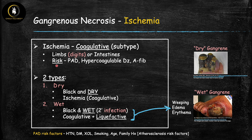The main risk factors for ischemic gangrenous necrosis are risk factors for peripheral arterial disease: high blood pressure, diabetes, high cholesterol, smoking, older age, and family history — all of which increase risk of thrombosis and ischemia. Another important risk factor is hypercoagulable disease. Finally, atrial fibrillation is a very important risk factor: in AFib the heart fibrillates rather than contracting in a coordinated fashion, increasing the risk of thrombi forming within the heart, which can embolize and cause ischemia to the limbs or intestines, causing gangrenous necrosis.